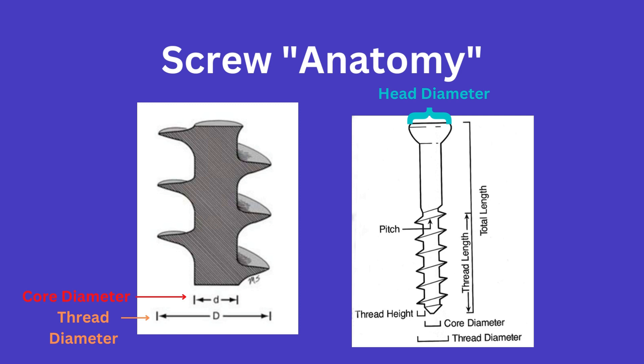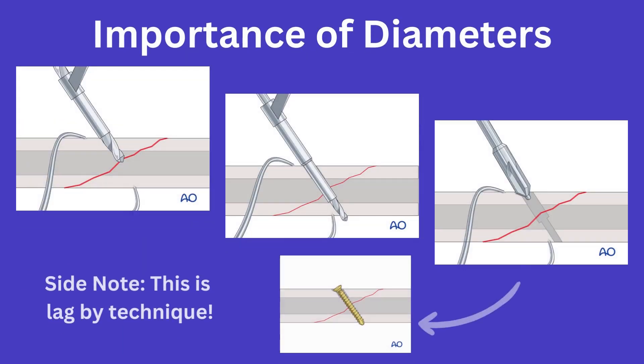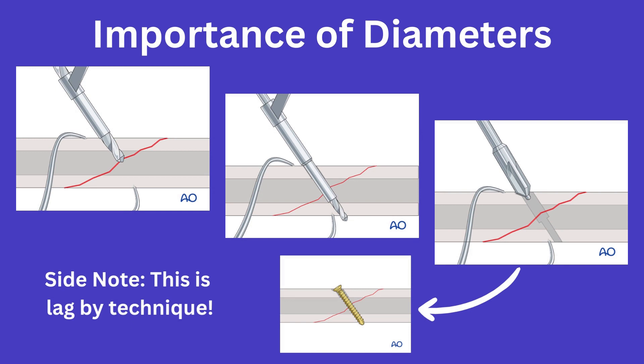These measurements are important when it comes to knowing the drill diameters you'll want to use when placing screws intraop. For instance, with this lag screw placement here, which as a side note I'll go over in further detail in a future video, you can see how important it would be to be aware of the different diameters. The proximal fracture fragment is drilled to the thread diameter and the distal fragment is drilled to only the core diameter.